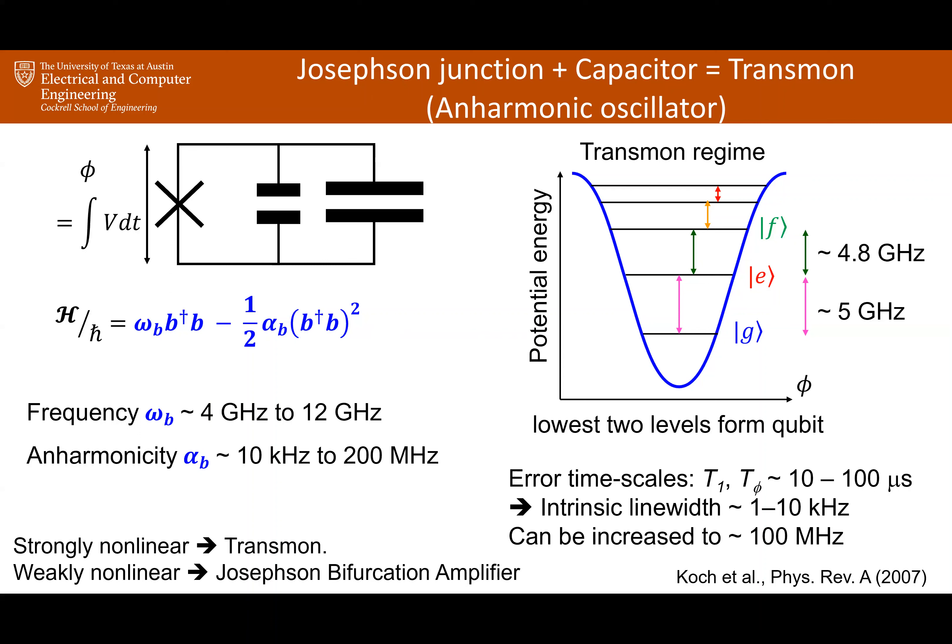Nothing is perfect — there is an error associated with storing information in this qubit. The typical timescale at which errors occur is roughly 10 to 100 microseconds, though now there are examples of qubits where this number is in the millisecond range. T1 is the relaxation time and T2 the dephasing time; the relationship is 1/T2 = 1/(2*T1) + 1/T_phi. They're all very closely related quantities.